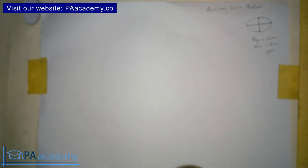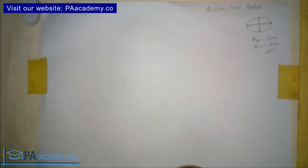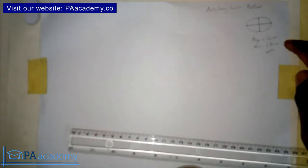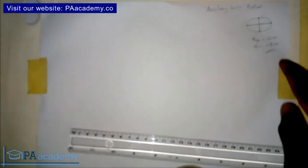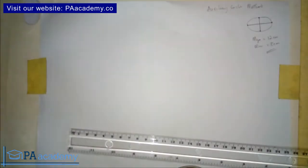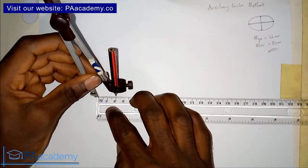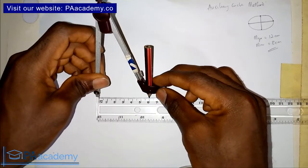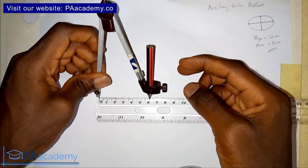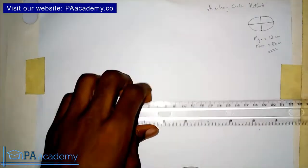If you haven't subscribed to PA Academy, please click the red subscribe button and also click the bell icon. Thank you if you've just subscribed — drop a comment so I know. Now, to start with the auxiliary method: since we know the major axis is 12 centimeters, we draw a circle with a diameter of 12 centimeters, meaning a radius of 6 centimeters. I'll pick my compass and ruler and measure 6 centimeters.